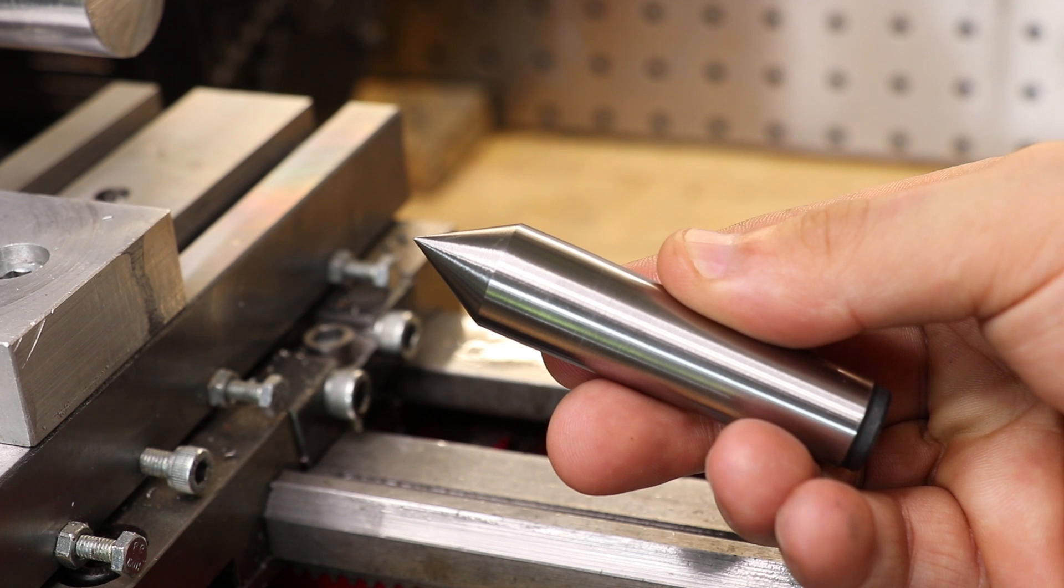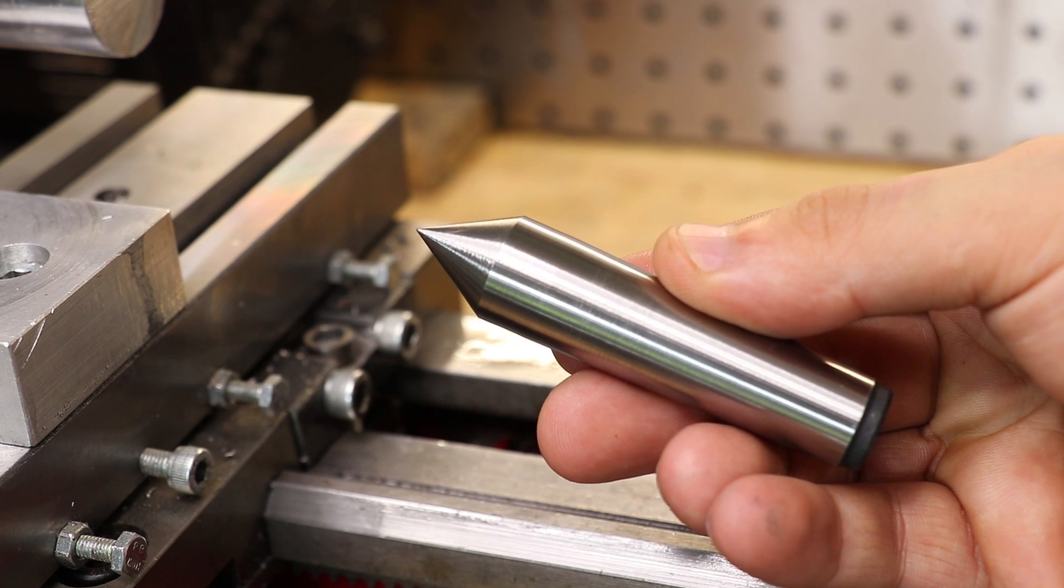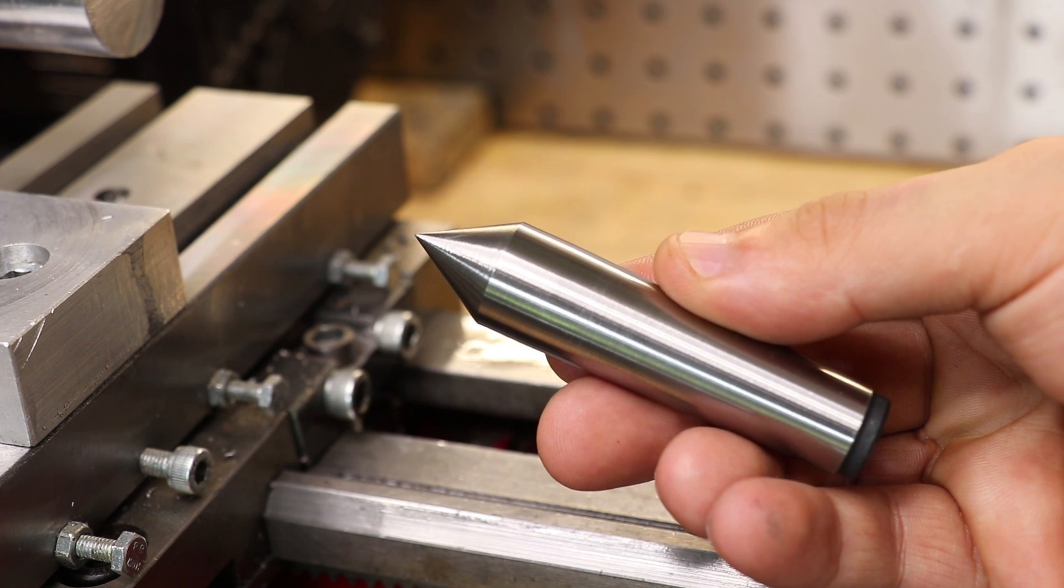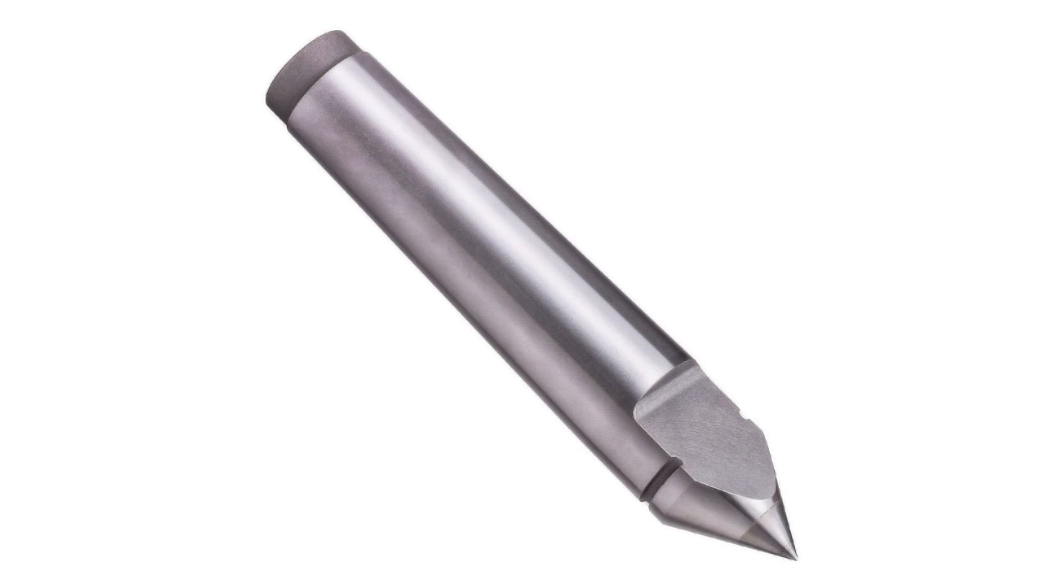So I thought I could make good use out of it by turning it into a half center. Looking at the pictures online, it looks like a regular center with a flat ground into one side. It's not ground all the way to the center, so I'll need to decide how far in to grind.